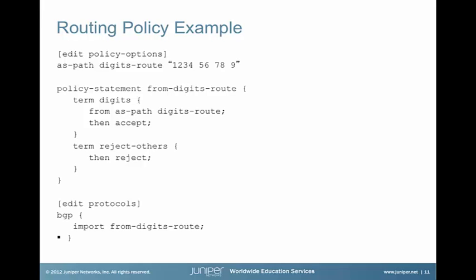Here's our first example: we want to match on a simple AS string. We're calling this the 'digits route' — 1, 2, 3, 4, 5, 6, 7, 8, 9. On the slide we see the creation of the regular expression under policy options. We give it the name 'digits route'. Below is the policy that references it — a term called 'digits' that says if it's from AS path 'digits route', except if not, then reject. We apply that as an import policy under BGP.